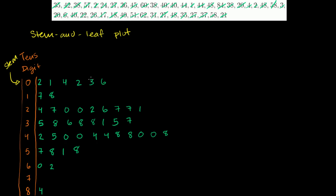We haven't lost any information here — I know every number. I could start with this and tell you every number that I had in my original list. But what's neater about this representation is we actually save ink, because you don't have to rewrite the 40 for 45 — you just write the ones digit. More importantly, we kind of understand how the numbers are distributed: we have a bunch of numbers in the 40s, 30s, and 20s — that's where most of the numbers are. We have very few numbers up in the 80s, no numbers in the 70s. So this is just one of many ways to visualize data that you will encounter in your mathematical or statistical futures.